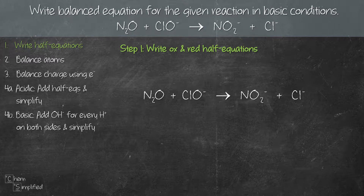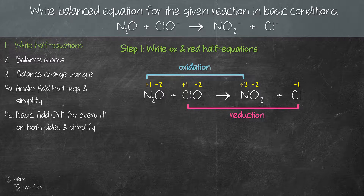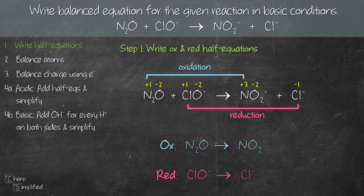For the first step we need to write out the oxidation and reduction half equations, and to do that we'll have to first figure out the oxidation number for each atom. From the oxidation numbers, nitrogen undergoes oxidation because its oxidation number increased from +1 to +3, whereas Cl undergoes reduction because its oxidation number decreased from +1 to -1. For oxidation it's N₂O going to NO₂⁻, whereas for reduction it's ClO⁻ going to Cl⁻.